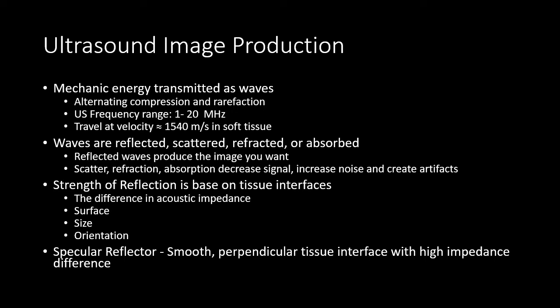The strength of a reflection off of a tissue interface is based on a few different basic factors: the acoustic impedance, or the difference in the way the wave travels through two different adjacent tissue types; the surface of that tissue interface and whether it's very smooth or irregular; the size of that tissue interface, whether it's a large uniform interface or a small interface; and the orientation of that interface to our probe — whether it's oriented perpendicular to the probe and thereby a strong reflector, or oriented parallel to our ultrasound wave and therefore a poor reflector.